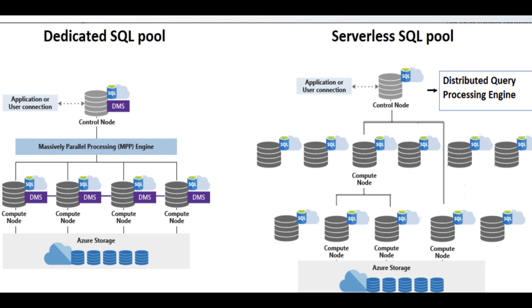I will show you a slide I've already explained in my Synapse series. In the dedicated pool with MPP architecture, any query you fire goes to the control node, which then distributes it across a defined number of compute nodes — which you have to define — along with Azure storage. So storage and compute are both present in your dedicated pool. In serverless, you do not define any storage; your data is already there, and the serverless pool queries it using the distributed query processing engine.